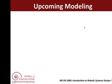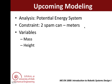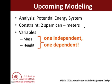In MU1000, you will be modeling your potential energy system. You will report on your results in your upcoming DPA8. As a simple example, note that you are constrained to two spam can meters worth of potential energy. This gives you two variables that you can choose: the mass and the height. Of course, one of these is independent and one is dependent.